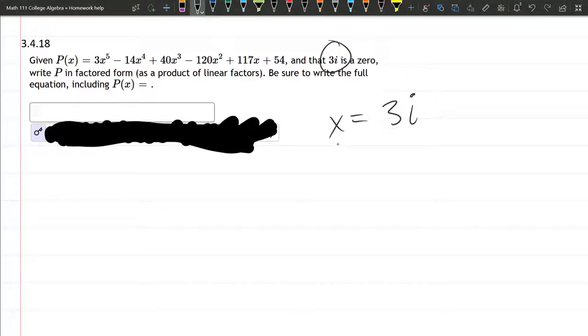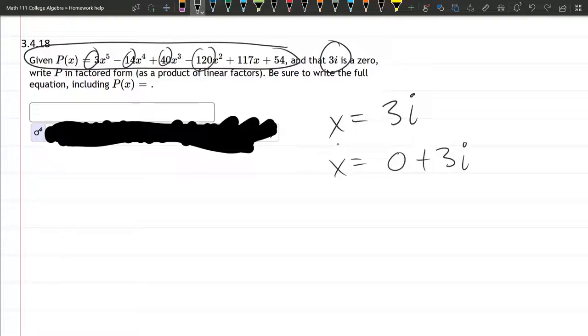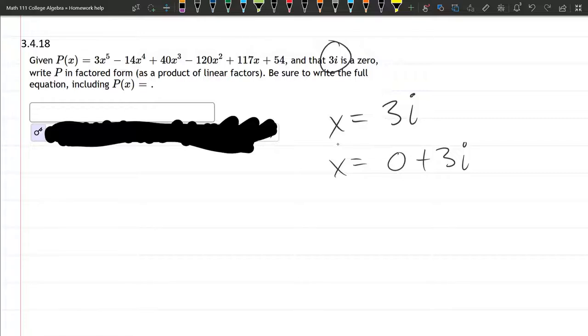So we know x equals 3i is a zero. We could write it as 0 plus 3i, so the real part is zero, the imaginary part is 3i. The conjugate pairs theorem says if we have a polynomial with real coefficients—all of the coefficients here are real numbers, they almost always are in this class—the conjugate pairs theorem says if we have a complex zero, the conjugate also has to be a zero.